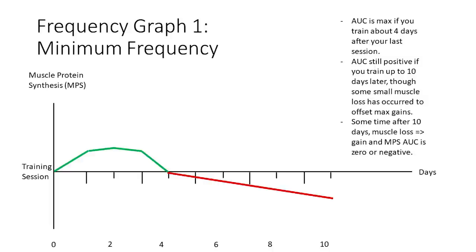If you train at the origin, muscle protein synthesis peaks around two days and falls back to normal around four days. Once MPS returns to normal, because the body normally catabolizes muscle at some slow rate with no reason to grow, it starts reverting toward homeostasis and burns a little bit of muscle over the next several days. At about 10 days, you're probably back to about the same muscle you started with if you only trained once. So if you train at least once more within those 10 days, you're going to get net muscle growth, assuming that session is above minimum effective volume.